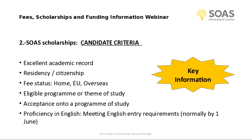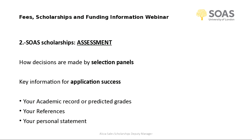Decisions on scholarships are normally made by a panel of SOAS academics. Key information for application success: firstly, your academic record or predicted grades. Most scholarships are based on academic merit. We are looking for well-qualified and committed applicants. When assessing applications, we will look at your most recent results and consider evidence of outstanding academic achievement as indicated by degree outcome, prizes and awards.